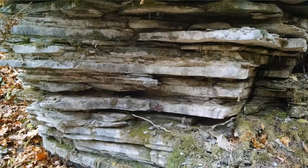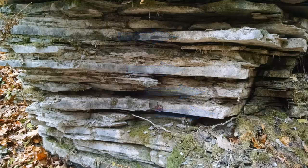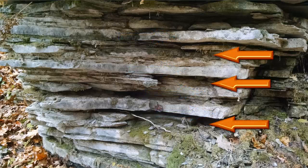Here we have an excellent example of differential weathering. The layers that are sticking out more are made of limestone — they're competent, they're harder and more resistant to weathering. The layers where you see it set back into the cliff face are shale,